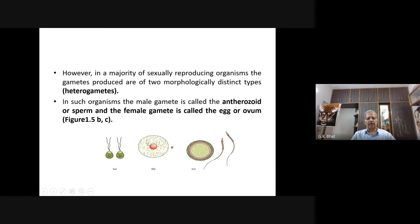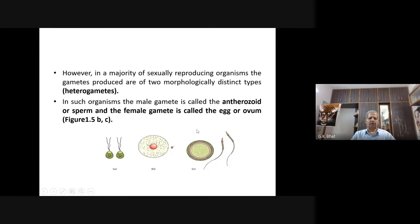You can see very clearly in this particular diagram: the large one, the big one, is the female gamete, and the tiny small one is the male gamete. In case of human beings, the larger spherical one is the egg or ovum, and the tadpole-like one is the sperm. So these are examples for heterogametes. Isogametes are seen in alga Cladophora. You should remember: Cladophora is an example for isogametes.